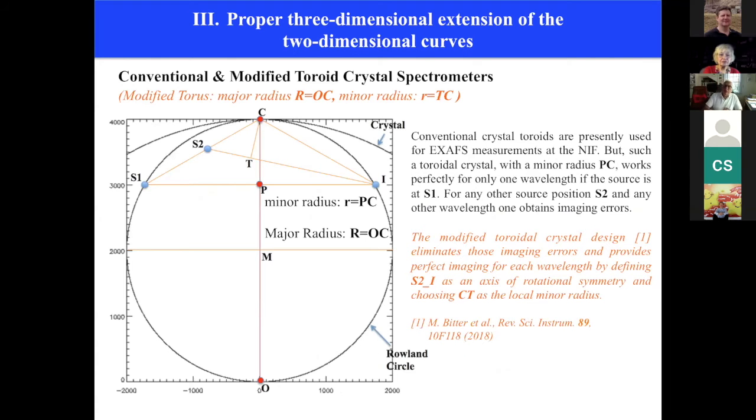The next important feature is to choose a proper three-dimensional extension of the two-dimensional curves, such that the imaging conditions are absolutely satisfied for each wavelength. To illustrate the problem, I consider the geometry of a conventional torus with a major radius R equal OC and a minor radius PC. Also shown here is a Rowland circle which passes through the crystal point C.